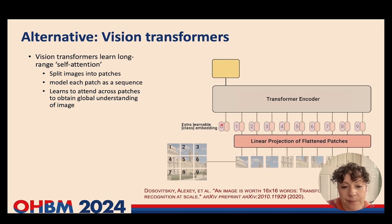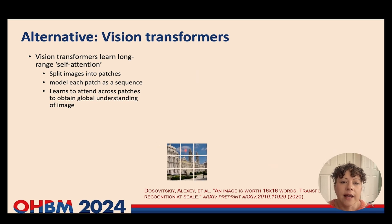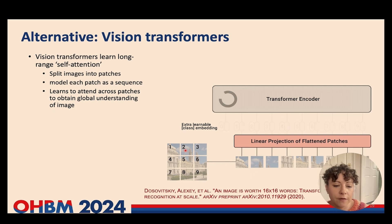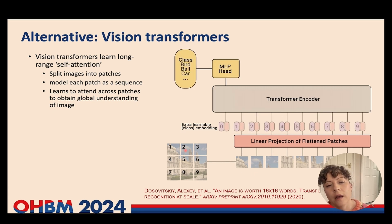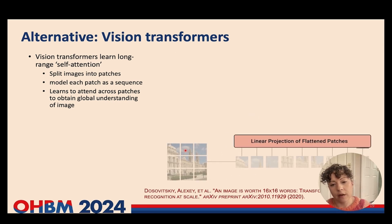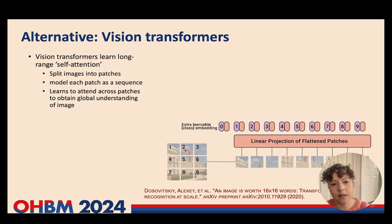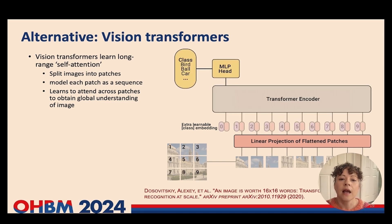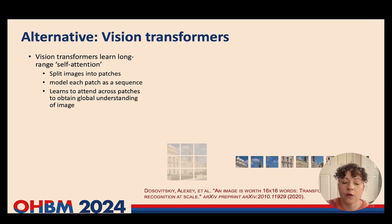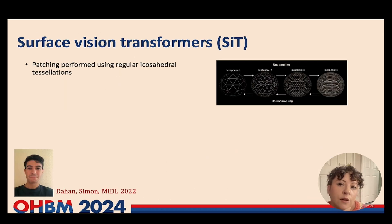Vision transformers work by taking an image, patching it into regions, and then treating those patches like any other sequence learning problem — for example, the most well-known use of transformers is for language modelling or audio modelling, such as in ChatGPT. By doing this, the model imposes much fewer assumptions — otherwise known as inductive biases — on how it models the data, making it much easier to translate this framework to a generic surface manifold. This was done by Simone Dahan, who has also put together an intuitive tutorial showing how to generalise this framework to your data.